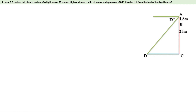We know alternate angles are equal. Also, sum of these two angles is 90 degrees. Since this angle is 35 degrees, this angle is 55 degrees. Based on this angle, DC is the opposite side and AC is the adjacent side. If you are taking this angle, AC is the opposite side and CD is the adjacent side. Anyway, we have to take the tan value. Depending on the value given, we can select the angle. If tan 35 is given, we can take this angle. If tan 55 is given, we can take this angle. Here I am going to take this angle. Based on this angle, CD is the opposite side and AC is the adjacent side.